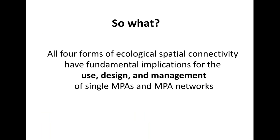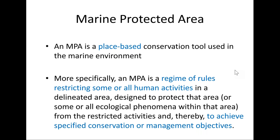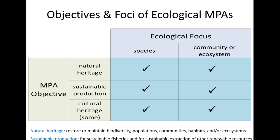Now, what are the implications for how we design or manage single MPAs or networks? An MPA is a place-based conservation tool used in the marine environment — more specifically, a regime of rules that restricts some or all human activities within a delineated area, designed to protect that area or ecological phenomena like a targeted species, community, or ecosystem from those restricted activities, to achieve a specified conservation or management objective.